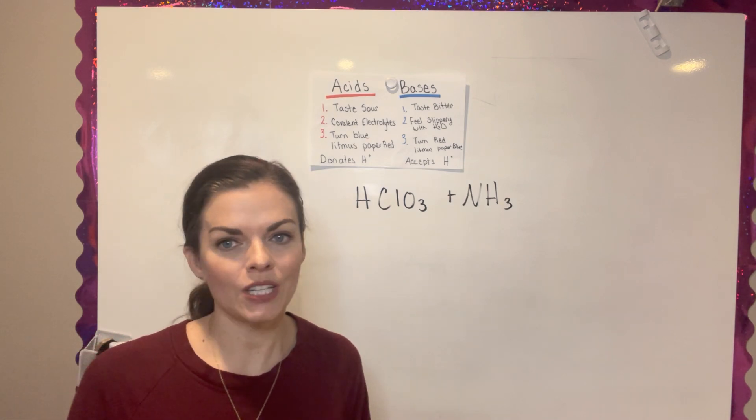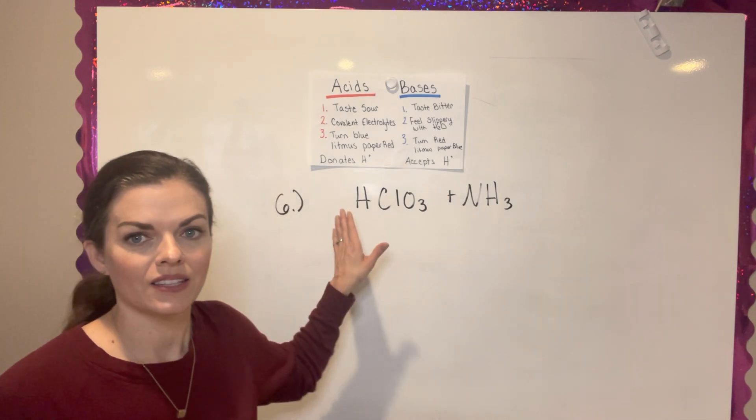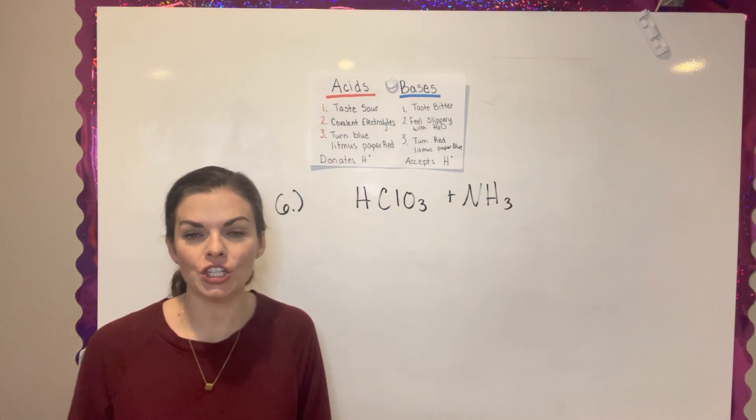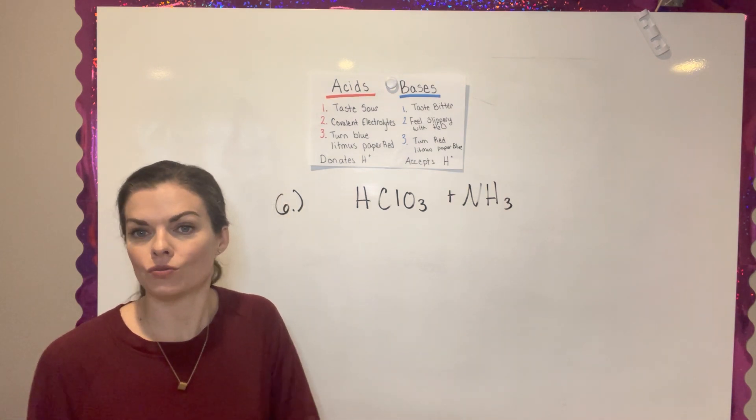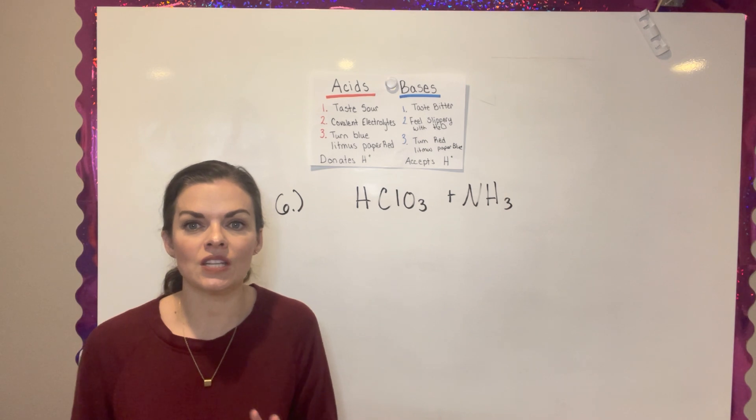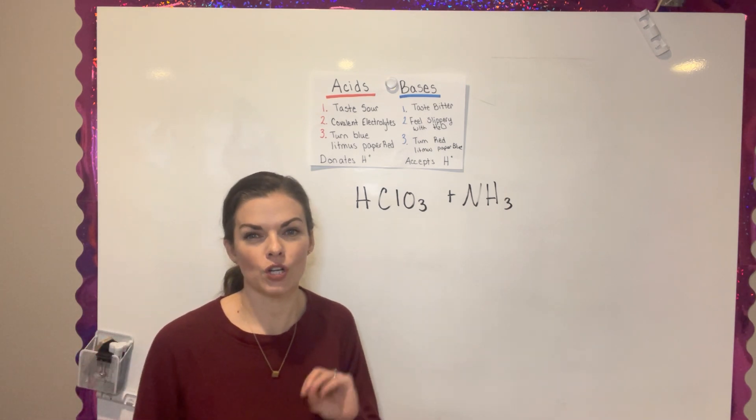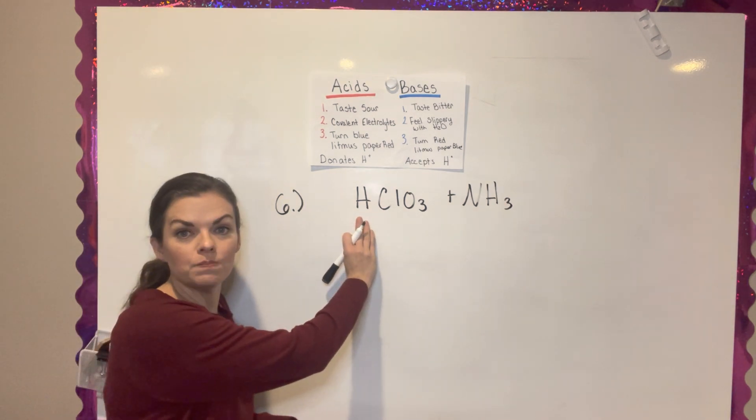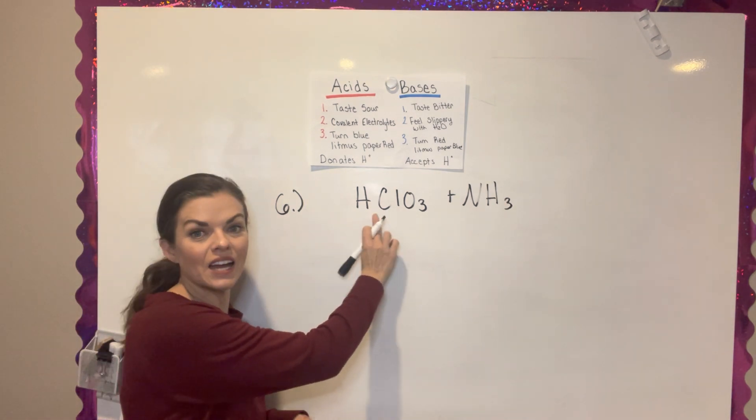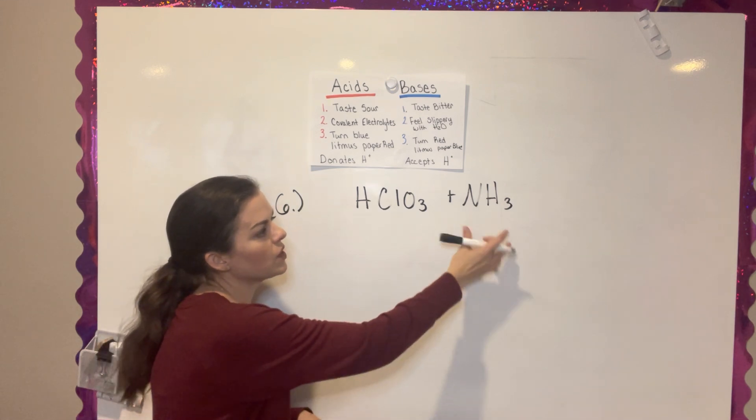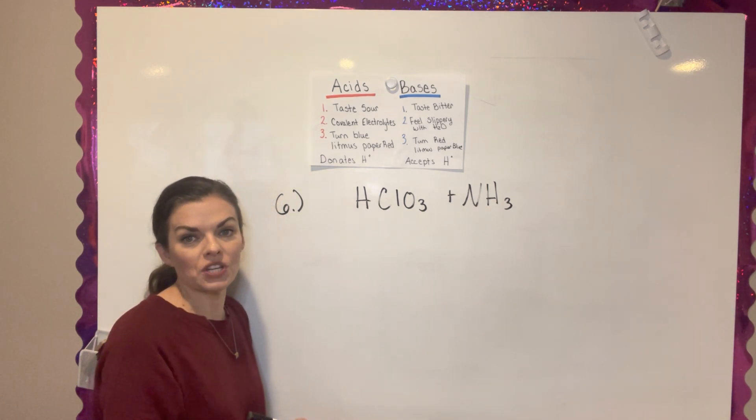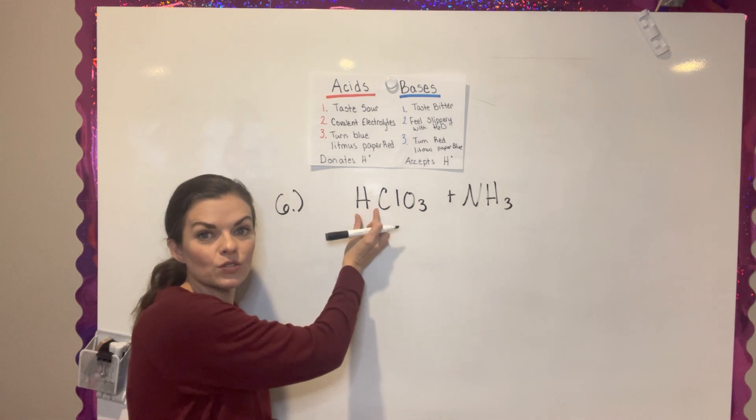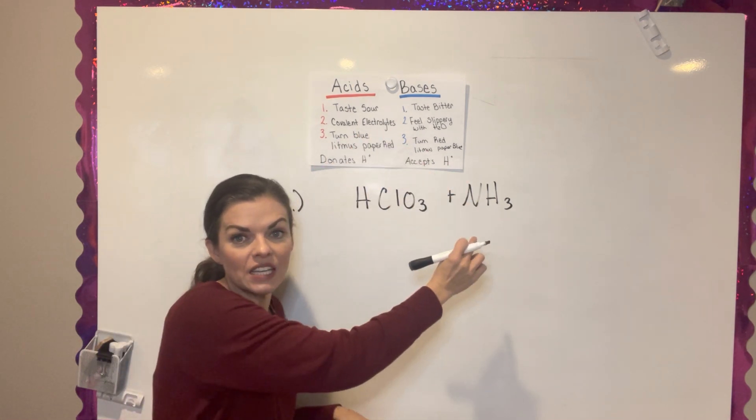Number six just gives you two reactants, these two, and it tells you to write the chemical reaction that will occur. Just like all chemical reactions, they feel very intimidating at first, but this one isn't too complicated. If you'll notice we have an acid because it has a hydrogen in the front and then we have NH3. What we're going to do in this reaction is we're basically just going to take this hydrogen and we're going to give it to the NH3.